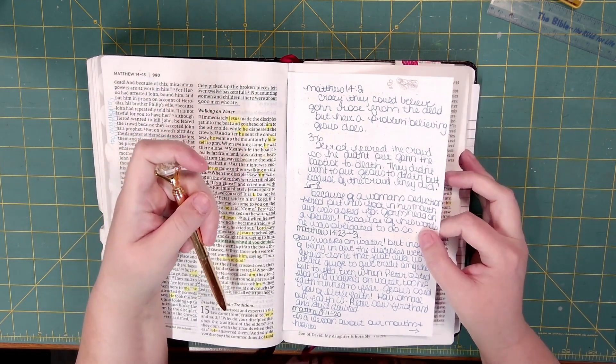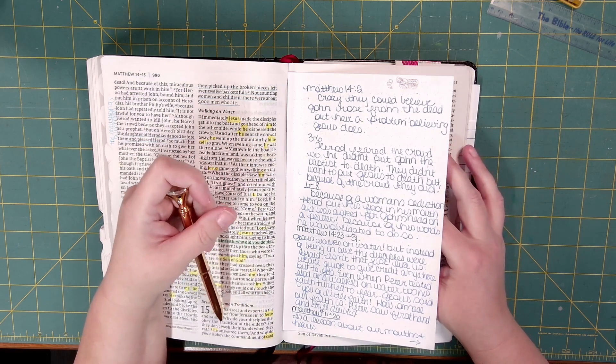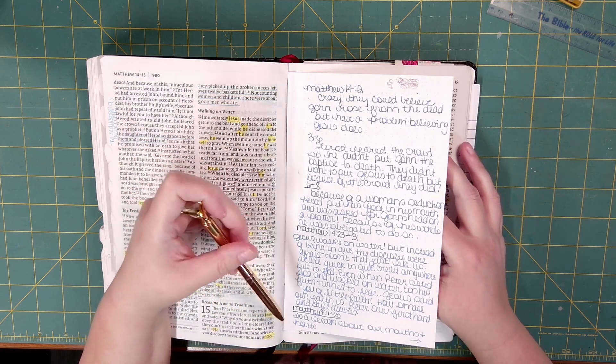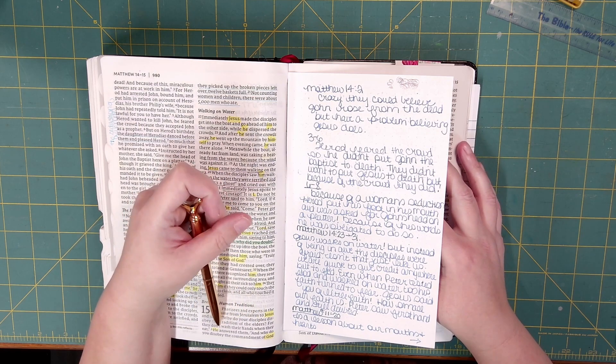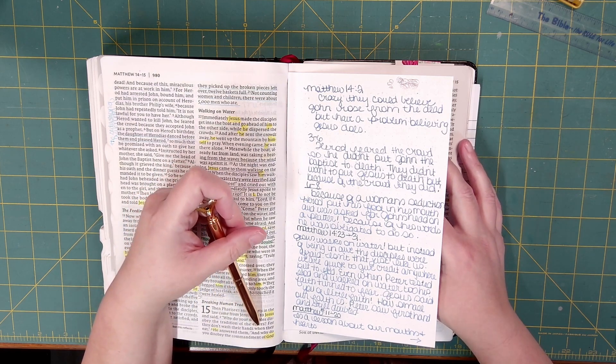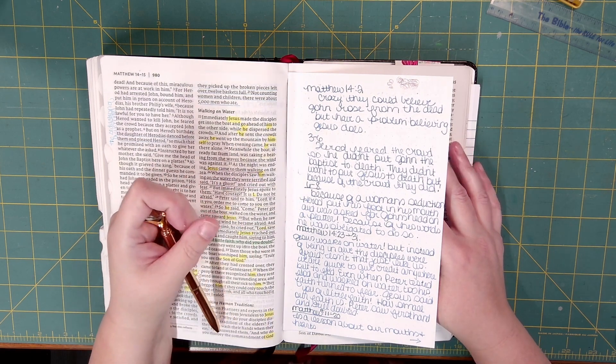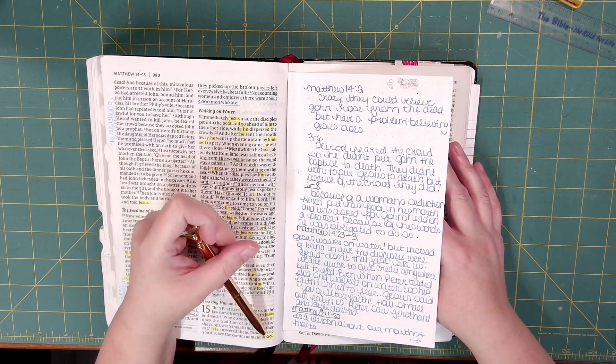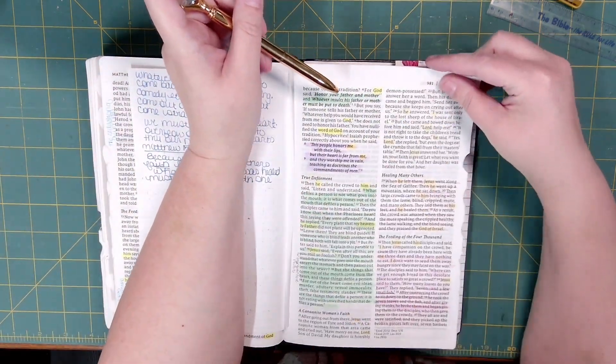Chapter 15. Then Pharisees and experts in the law came from Jerusalem to Jesus and said, Why do your disciples disobey the tradition of the elders? For they don't wash their hands when they eat. He answered them, And why do you disobey the commandment of God because of your tradition?